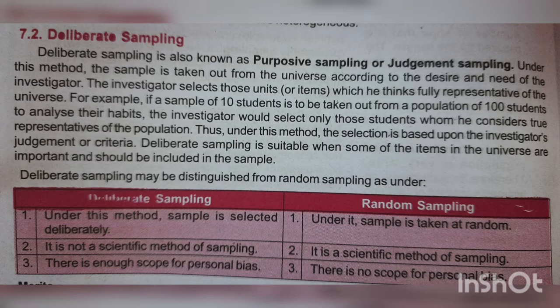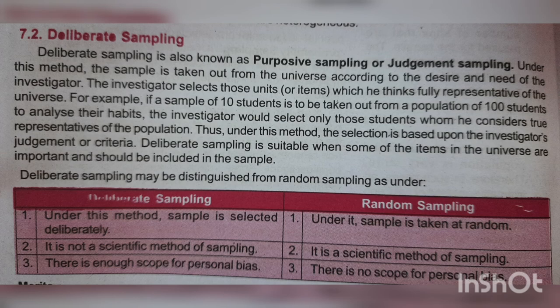For example, suppose there are 100 students in a particular classroom and we are analyzing study habits — maybe how many hours the students are studying — and we are making a survey. In case of deliberate sampling, the investigator or the teacher will be choosing only those 10 or 15 students as a sample whom he or she considers to be true to their words. So any sampling done under this method is known as deliberate sampling.